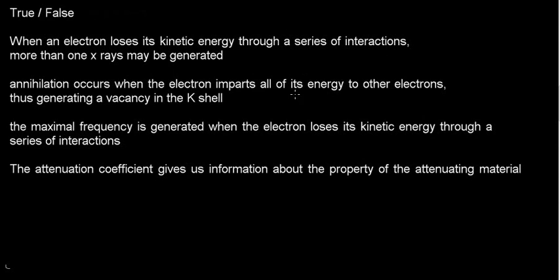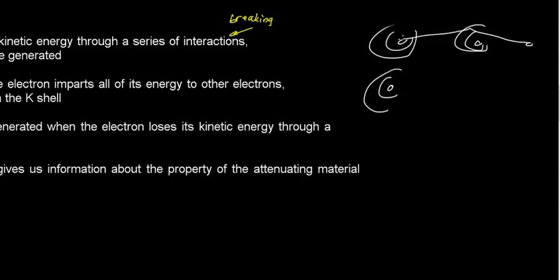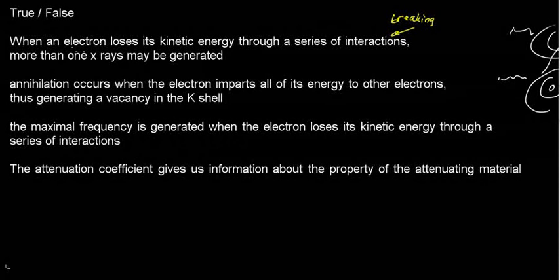The way I do true/false is: if I need to correct the sentence to make it sound reasonable to me, then I mark it false. First question: 'When an electron loses its kinetic energy through a series of interactions' — here we're really talking about Bremsstrahlung radiation, so I just mark 'Bremsstrahlung' — 'more than one X-ray may be generated.' Looking at the depiction from the presentation, you can see a series of atoms and an electron bouncing from them, with each interaction emitting a photon in the Bremsstrahlung mechanism.